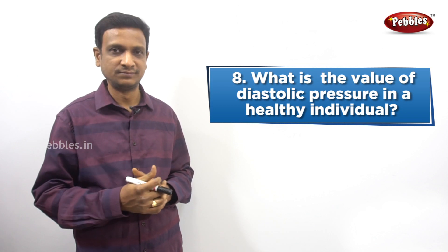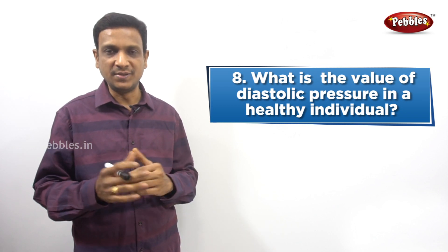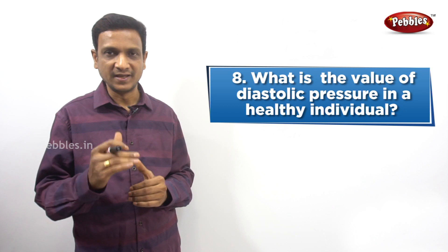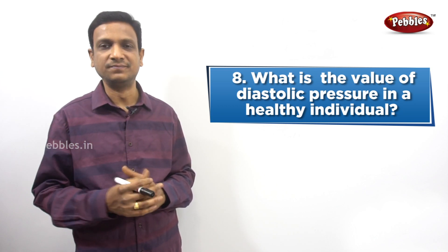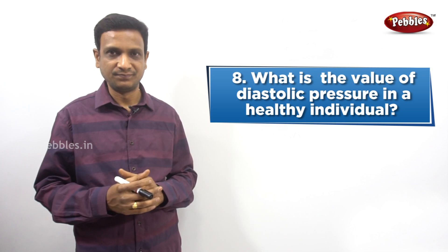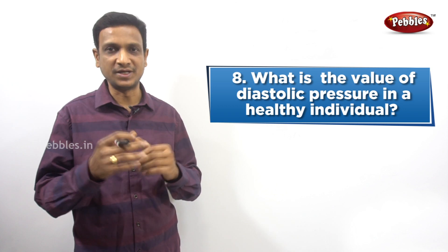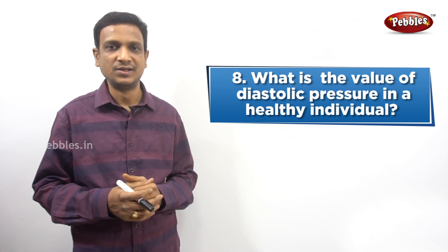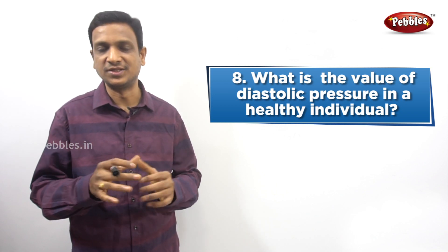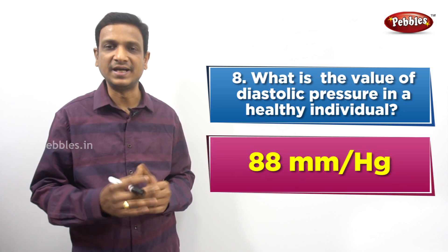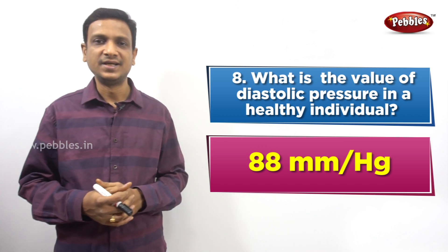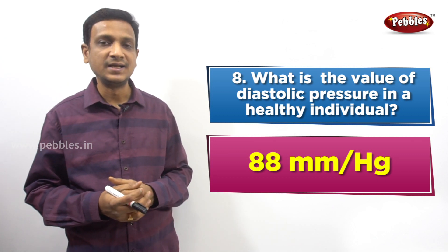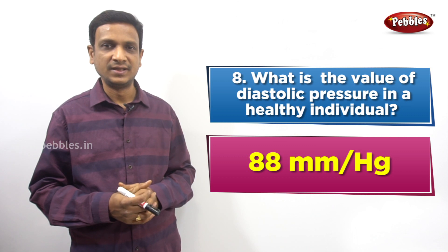Looking at the blood pressure of a normal healthy individual, the value is 120/80 mmHg. The numerator 120 denotes the systolic pressure, and the bottom number 80 mmHg is the diastolic pressure. So the answer is 80 mmHg - that is the value of diastolic pressure in a healthy individual.